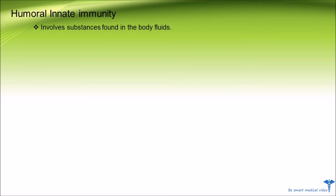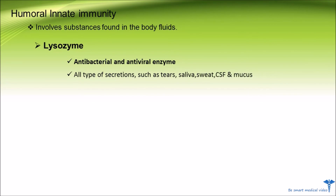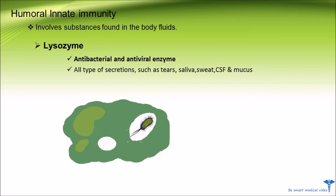Now we will discuss humoral innate immunity, which involves substances found in body fluids. Number one is lysozyme. Lysozyme is a major antibacterial and antiviral enzyme that inhibits the growth of bacteria. It is abundant in all types of secretions such as tears, saliva, sweat, CSF, and mucus. The lysosome, containing digestive enzymes, combines with the phagosome and destroys the peptidoglycan layer of the cell wall.